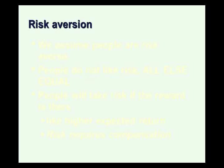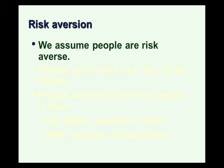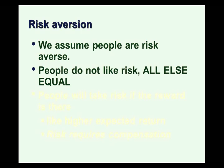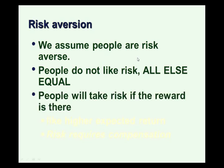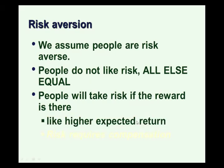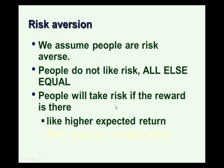With risk aversion, we assume that people are risk averse. This is a basic assumption in economics and finance used to guide and predict human behavior. What this means is that people do not like risk, all else equal. So if you hold every other factor equal in an investment, people would always choose the one with lower risk. Not everything else is equal, which can make things more complicated, but if the reward is there, people will take a risk. Risk averse investors will take risk for a higher expected return if they think the higher expected return is sufficient to compensate them for what they don't like, which is risk.